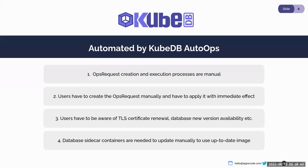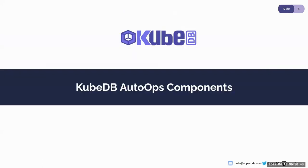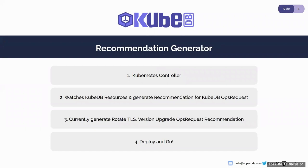KubeDB Auto Ops is going to automate those manual processes. The first component is the Recommendation Generator — a Kubernetes controller that watches KubeDB resources and generates recommendations for KubeDB ops requests. Currently the Recommendation Generator generates rotate-TLS recommendations and version-upgrade ops request recommendations. You just deploy the Recommendation Generator and it will start generating recommendations for your DB resources.